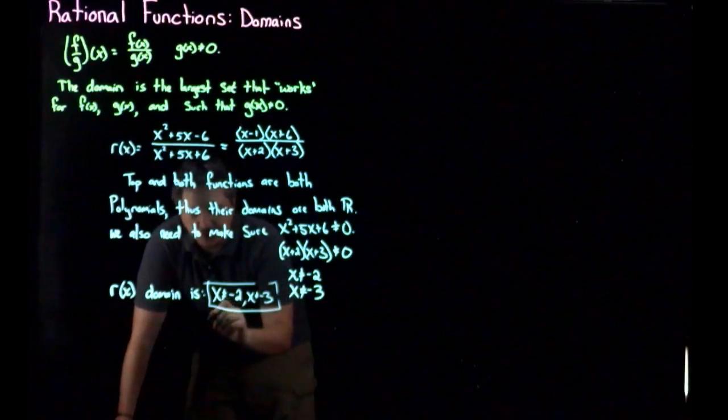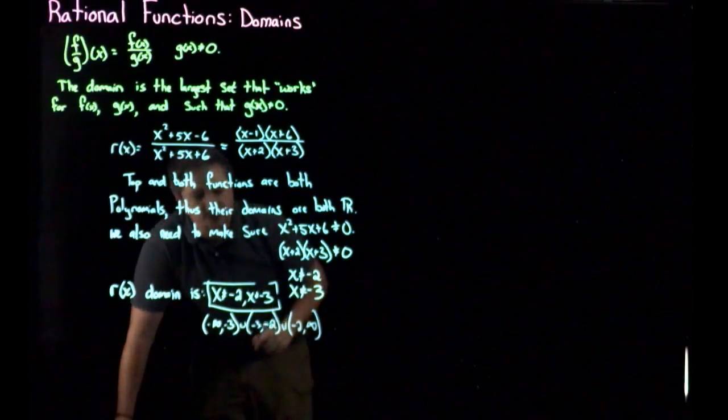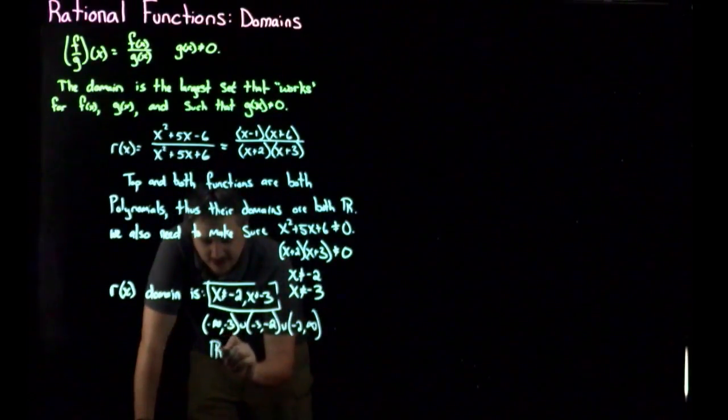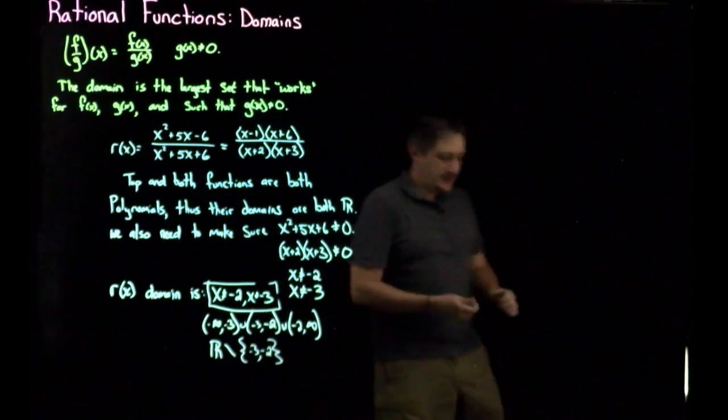So r of x's domain is simply x not equal to negative 2 and x not equal to negative 3. Alternatively, you could also write this as negative infinity to negative 3, union negative 3 to negative 2, union negative 2 to infinity. If you prefer interval notation. I guess also we could write this as R set minus {negative 3, negative 2}.